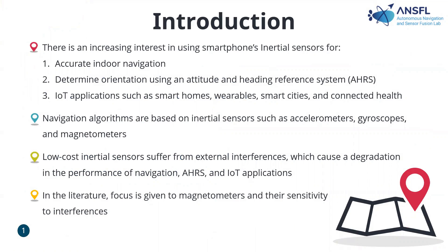Some introduction about my paper. Today there is increasing interest in using smartphone inertial sensors for many usages, like accurate indoor navigation, determining orientation using an attitude and heading reference system, and for IoT applications such as smart home, wearables, smart TV, and connected devices. Navigation algorithms are based on inertial sensors, which consist of an accelerometer, gyroscope, and magnetometer. Because these inertial sensors are low-cost, they suffer from external interference, which causes degradation in the performance of navigation, AHRS, and IoT applications.